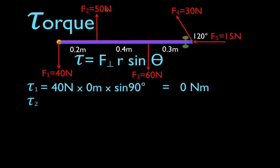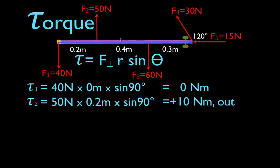Force number two is 50 newtons. It's applied 0.2 meters away, so the lever arm is 0.2. We multiply the force times the distance times the sine of the angle — the angle is 90 degrees — and we get that the torque produced by force number two is 10 newton meters. I put a positive sign here because forces that cause objects to rotate in the counterclockwise direction produce a positive torque. Torque is a vector; this is the magnitude and this is the direction. The torque vector is always perpendicular to the radial vector and the force vector.